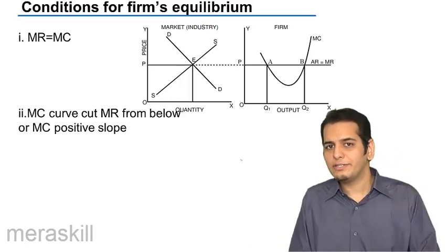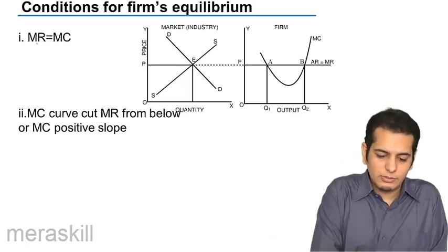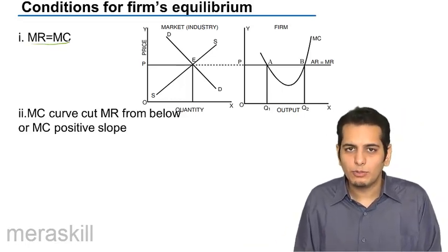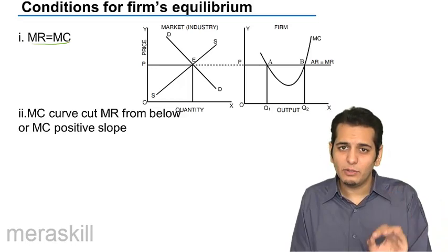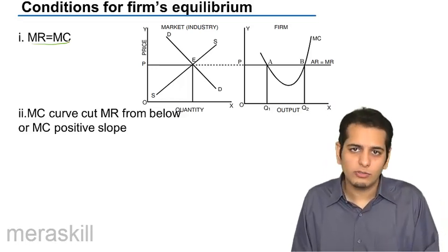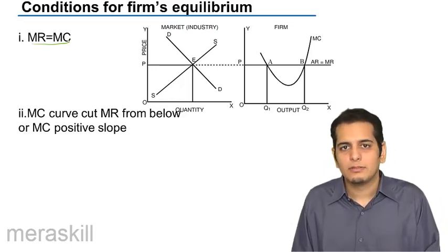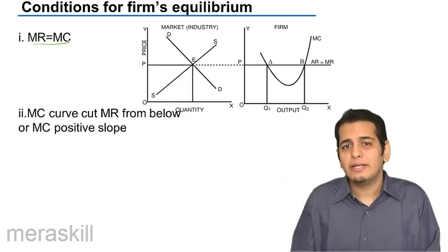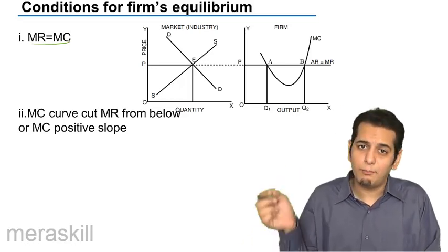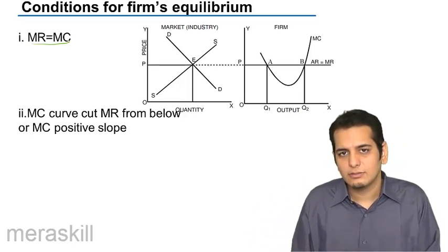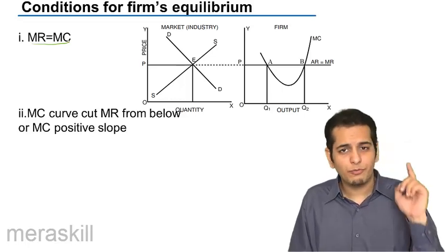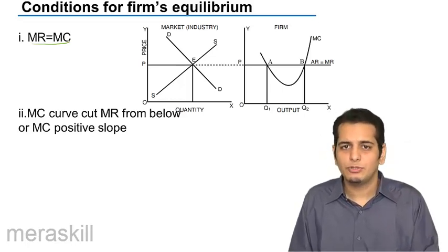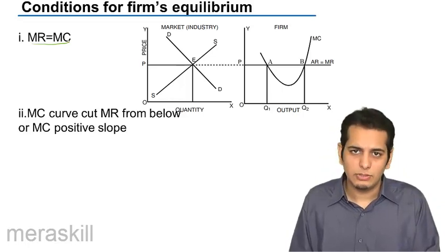There are two conditions for it. First, MC should be equal to MR. That means marginal revenue should be equal to marginal cost. Both the curves should be intersecting each other, and the point at which they intersect would be the point of equilibrium. So the first order condition is marginal revenue should be equal to marginal cost.